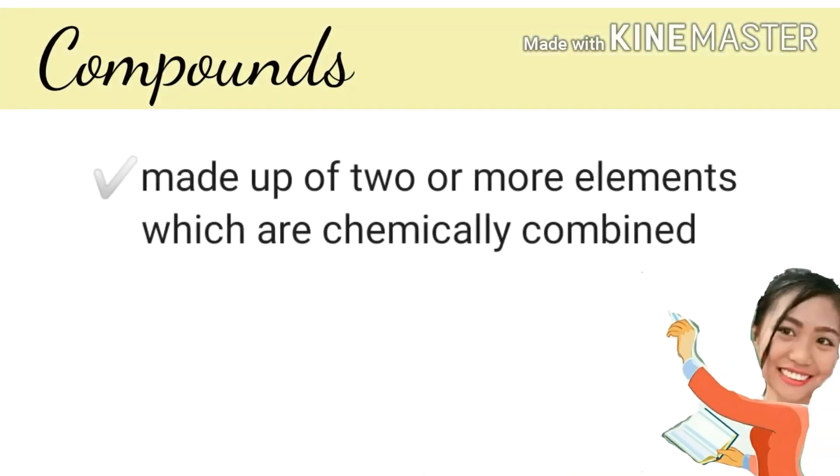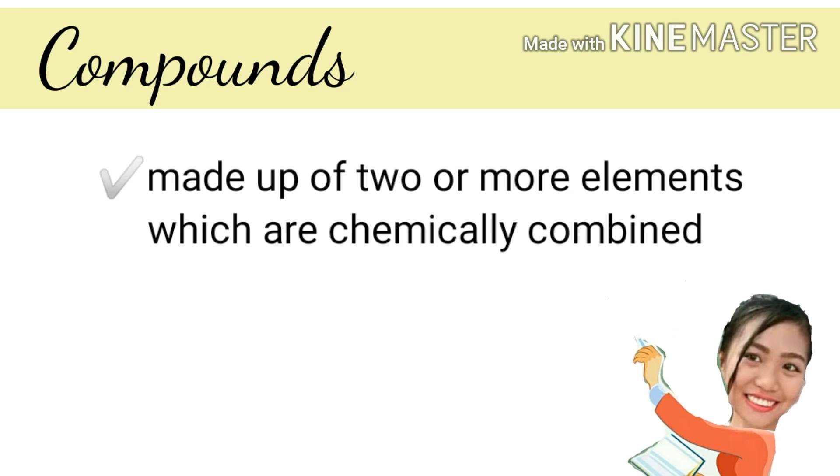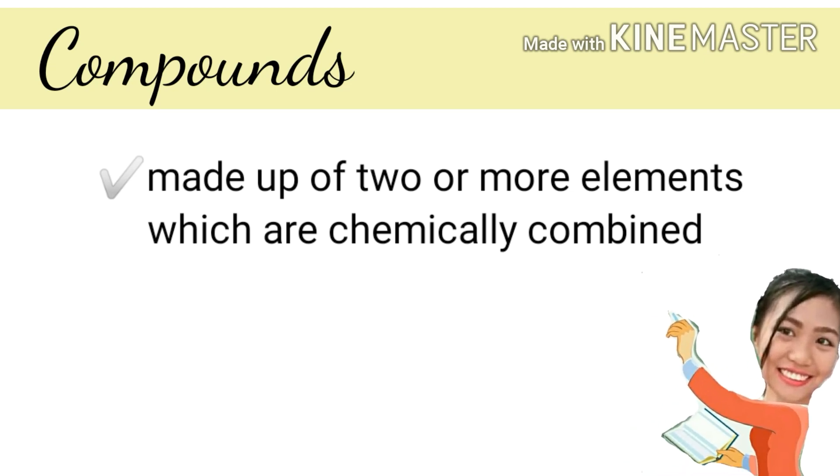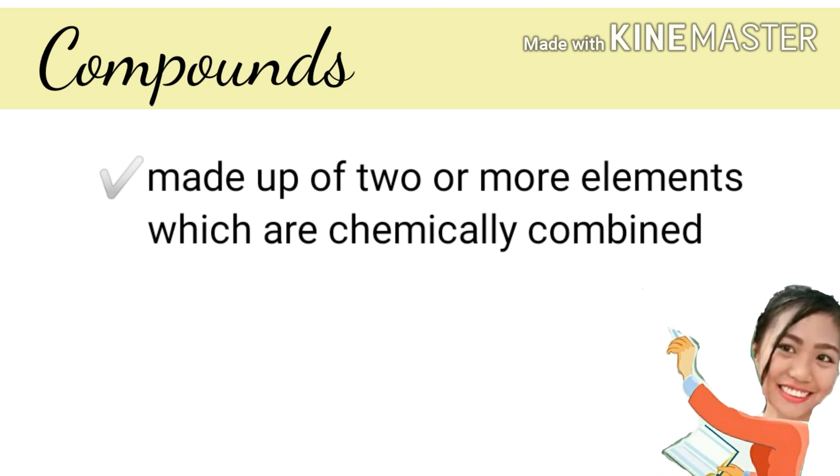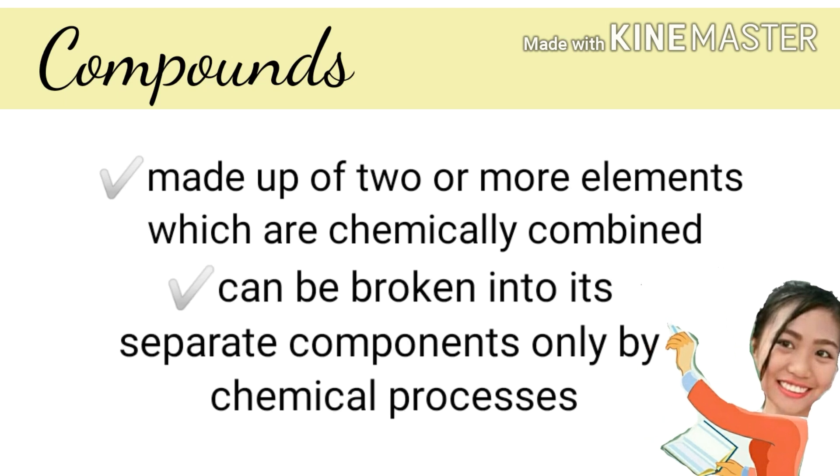Next is compounds. It is made up of two or more elements which are chemically combined. It can be broken into its separate components only by chemical processes.